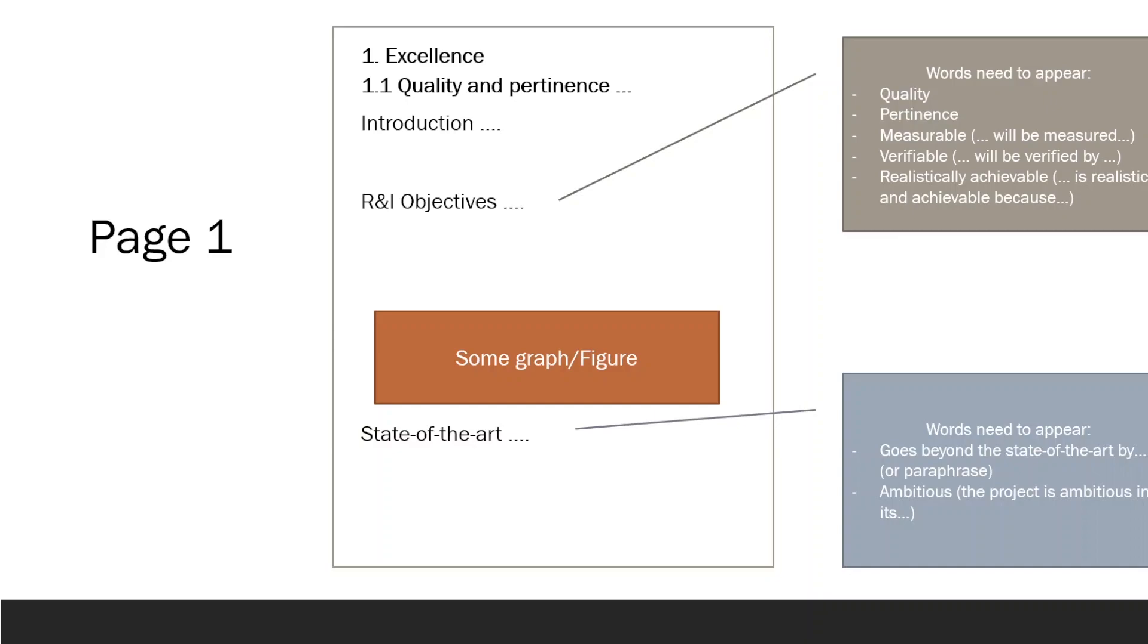In the State of the Art section, describe how the project surpasses the state of the art, and emphasize its ambition. Provide a reason or explanation for why or how the project is ambitious. On this page, the acronym for the project should also be included.